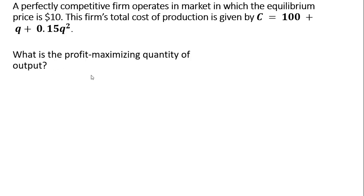What is the profit maximizing quantity of output? We're going to create a profit function. Profit is total revenue minus total cost, where total revenue is given as price per unit times the quantity.